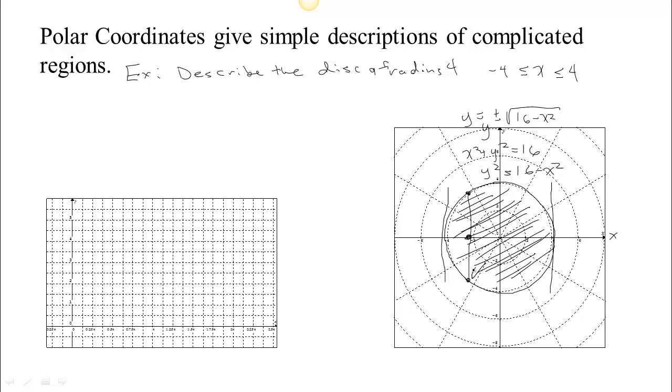If you use the negative one, you're here. If you use the positive one, you're there. For y's in this range, the description is actually somewhat complicated. The y's are between negative square root of 16 minus x squared and positive square root of 16 minus x squared.